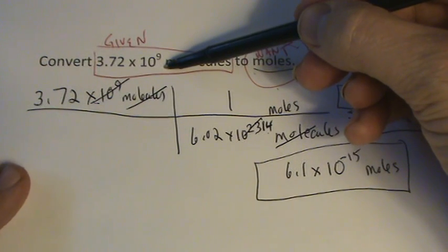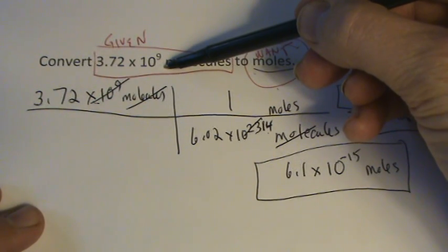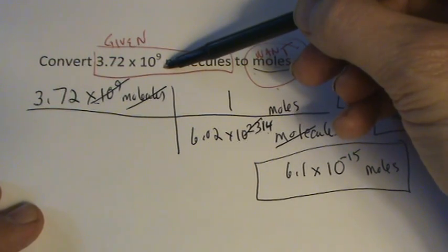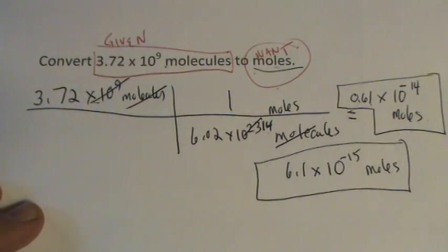This is a really small number, so it's not even close to 6.02 times 10 to the 23rd. So we know we should get a pretty small answer for our moles, and we certainly did right there.